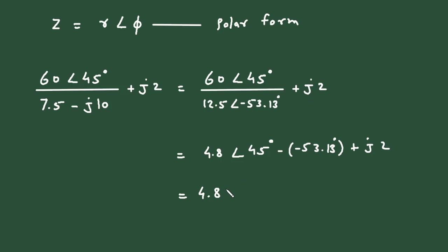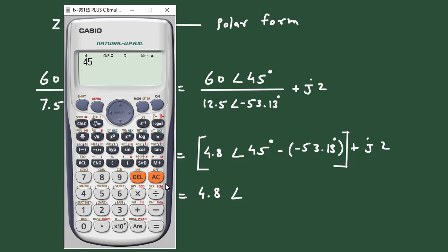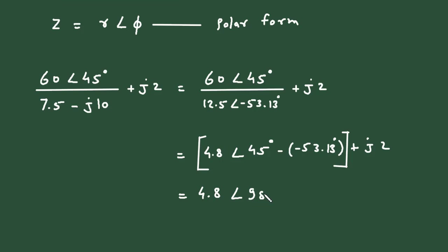Then we add j2 as it is. So this gives us 4.8 at an angle of 45 minus (minus 53.13), which equals 98.13 degrees, plus j2.